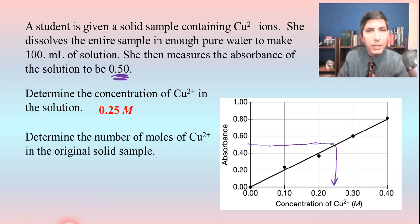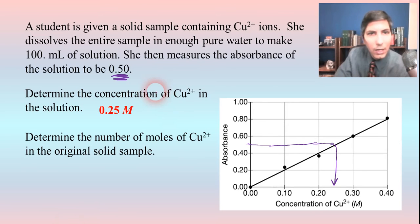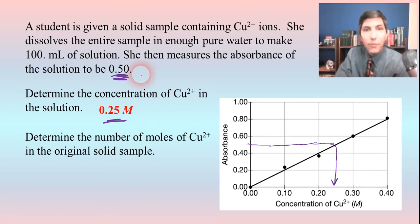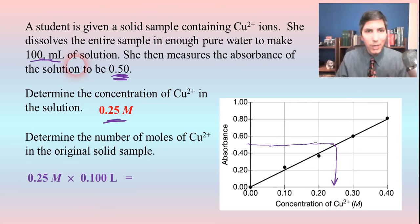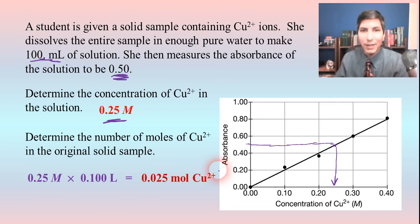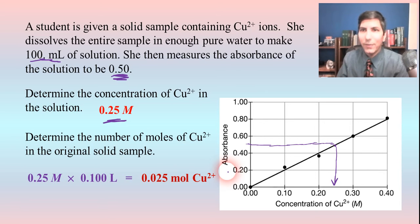Now what if the question says determine the number of moles of copper ions in the original solid sample? Well, if we have the concentration in moles per liter and we have the volume of the solution, which is 0.1 liters — 100 milliliters — all we have to do is multiply those two by each other to get moles. So we take 0.25 molar times 0.1 liters and we get 0.025 moles of copper ions.